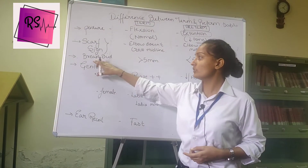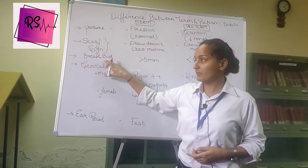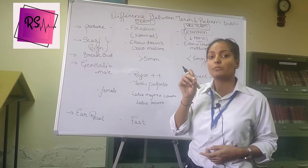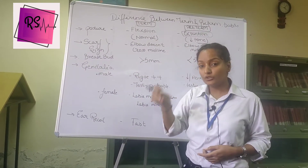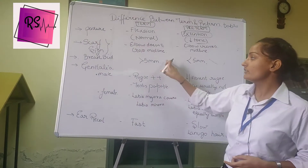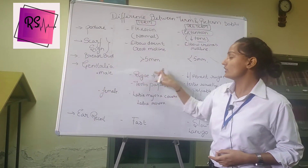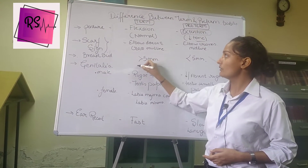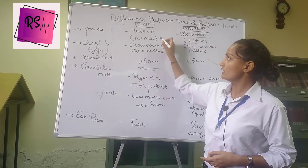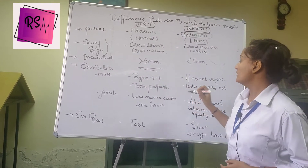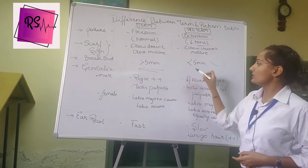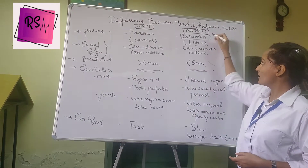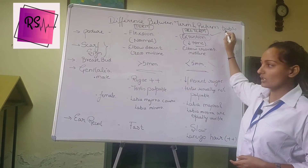Third, we talk about the breast bud — the nipple of the newborn. If the size of the breast bud is more than 5 mm, the child is a term baby. If the breast bud is less than 5 mm, then the child is a preterm child.